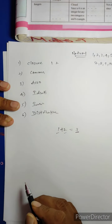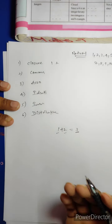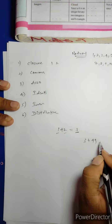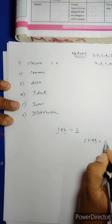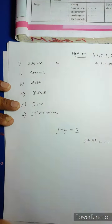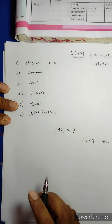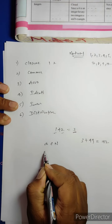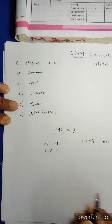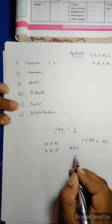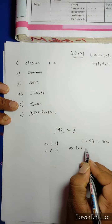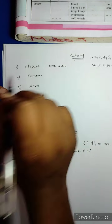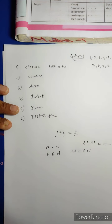Another student may take 3 as the first number and 99 as the second number. Then the sum of these two numbers, 102, also belongs to the set of Natural Numbers. This is called Closure property. In general, if A belongs to natural numbers and B belongs to natural numbers, then A + B also belongs to natural numbers. That is the Closure property.